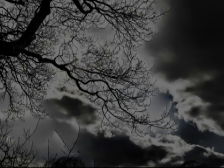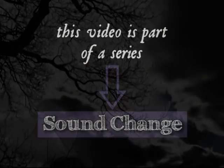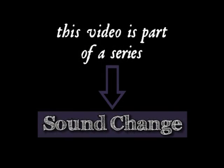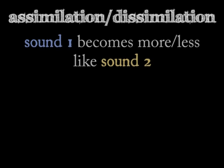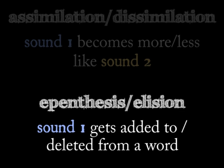This video continues a series about the various types of regular sound changes that happen over time in language. Last time we considered situations where existing sounds became more or less similar to one another — assimilation and dissimilation. This time it's all about sounds that get added to or deleted from words.